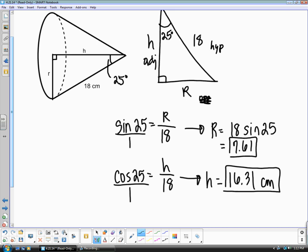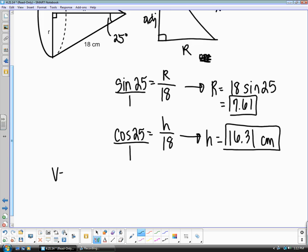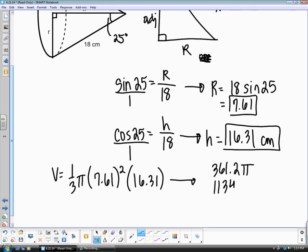So now that we know our radius and our height, let's just go ahead and plug it into our volume formula. Our radius is 7.61. We need to square that and then we need to multiply that by our height. If you want to take a minute and do that, go ahead. Your solutions should come out to be somewhere close to those values.